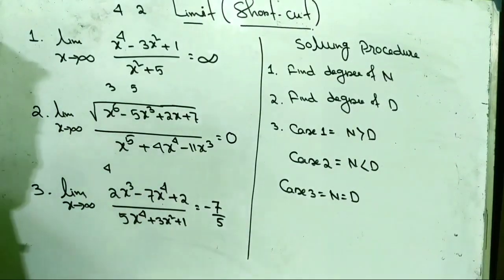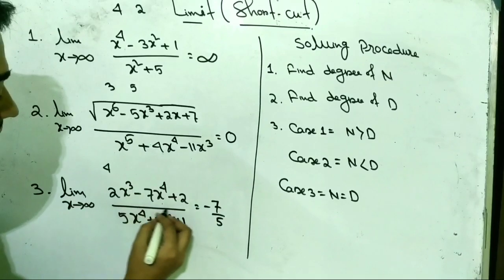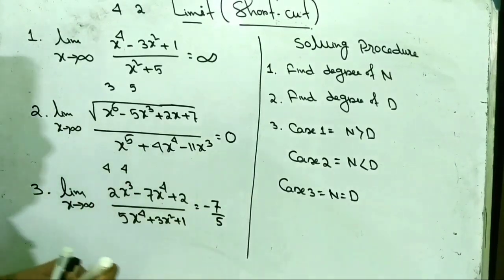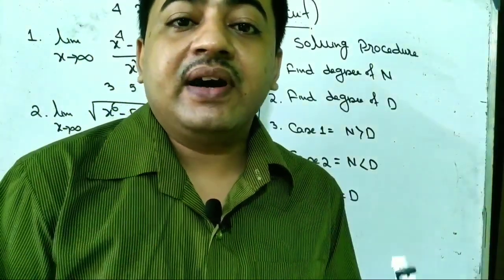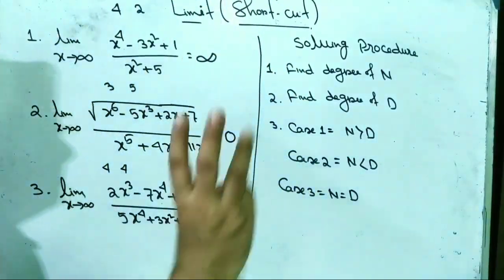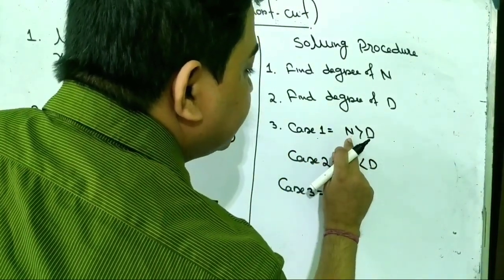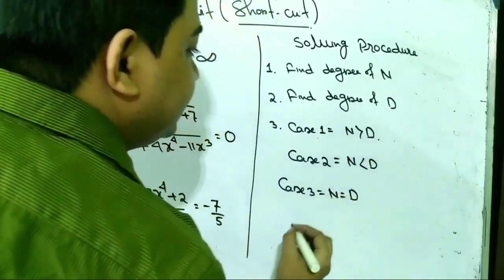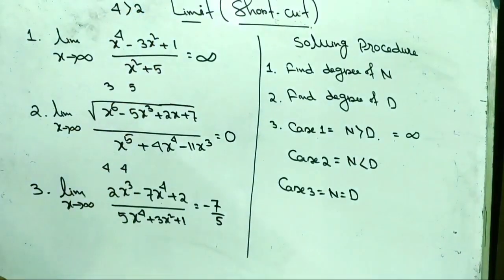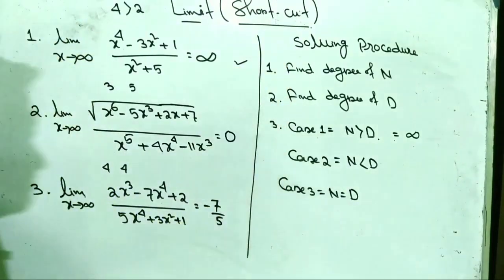The highest power of x in the numerator gives degree 4, divided by the highest degree of the denominator which is also 4. There are 3 cases. Case 1: if the degree of the numerator is greater than the degree of the denominator, then the value is infinity. In the first problem, 4 is greater than 2, so the value of that problem is infinity.